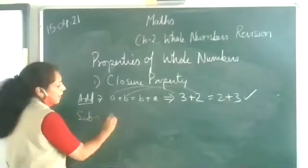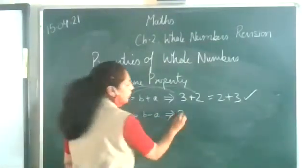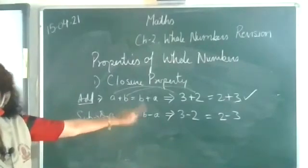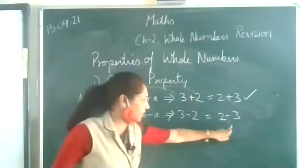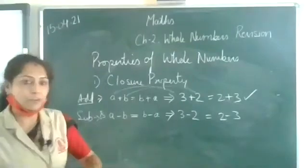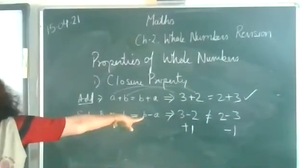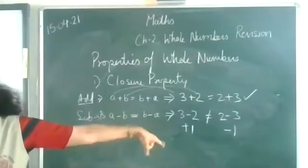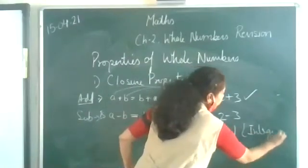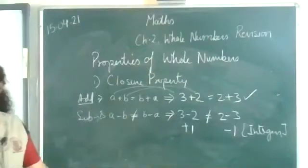Now I am doing subtraction. Is A minus B equal to B minus A? Three minus two equals two minus three? Watch carefully. Three minus two is plus one, and two minus three is minus one. And minus one is not a whole number — you have to study the integers category for that. Minus numbers fall in the category of integers. So the results do not match; closure property does not hold for subtraction.